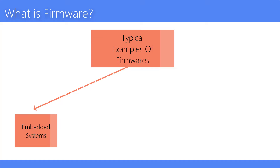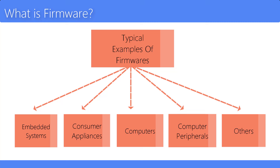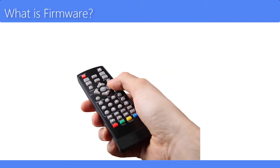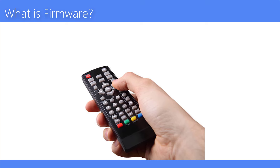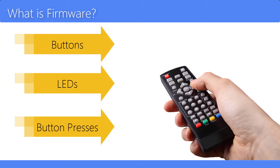Typical examples of devices containing firmware are embedded systems, consumer appliances, computers, computer peripherals, and others. A television remote control is an example of an engineered product that contains firmware. The firmware monitors the buttons, controls the LEDs, and processes button presses in order to send data in a format the receiving device — in this case a television set — can understand.